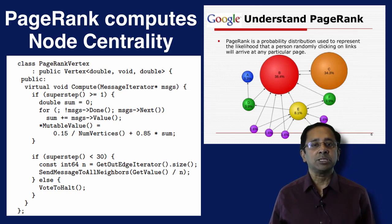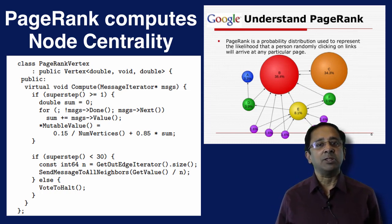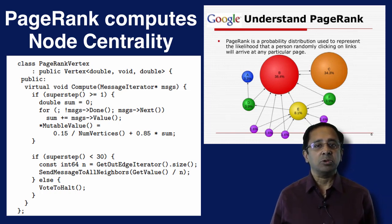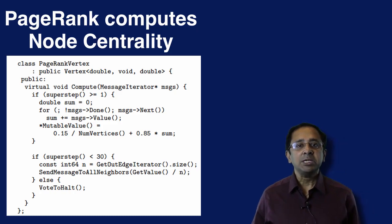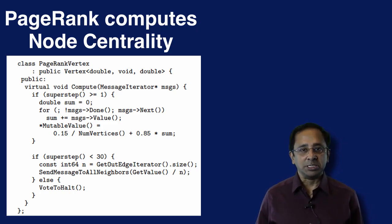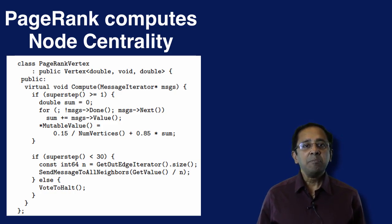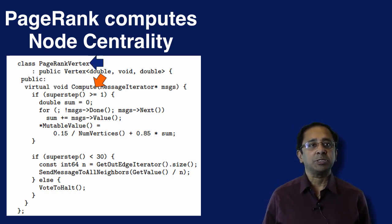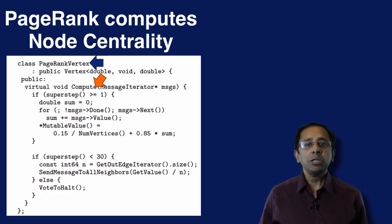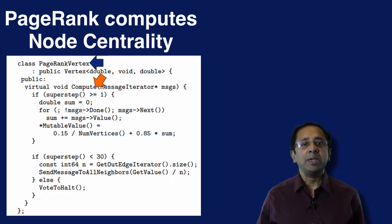On the left side, we have Google's published C++ code that implements the PageRank method on the Pregel infrastructure. You don't have to know C++ to understand the basic essence of the code. We will explain the basic elements of the vertex program in the next few slides. The BSP technique considers a vertex to be a process, and every vertex implements a method called compute.